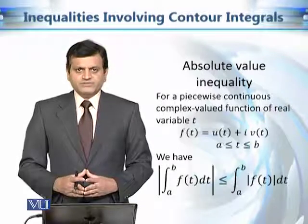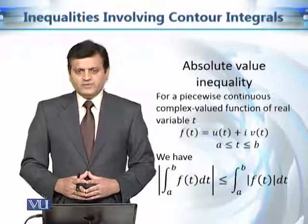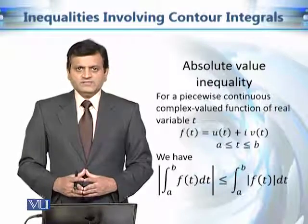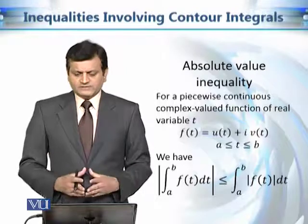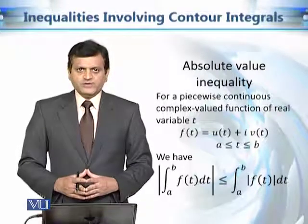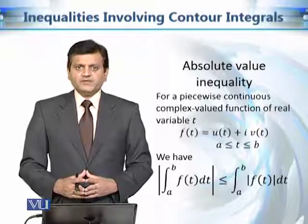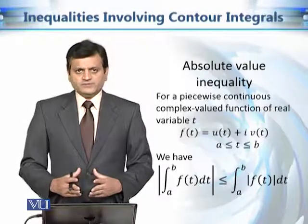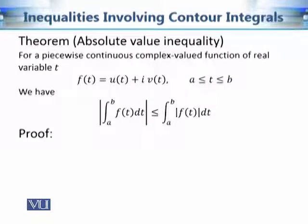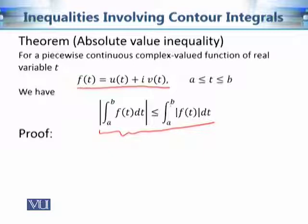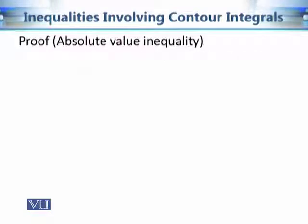Our first inequality involves the integration of a complex valued function of real variable t. If the limits are taken from a to b, then the inequality says that the modulus of the integral from a to b of f(t) dt is less than or equal to the integral from a to b of the modulus of f(t) dt. Here f(t) is a complex valued function of a real variable t, equal to u(t) plus i·v(t). This is what we want to prove.